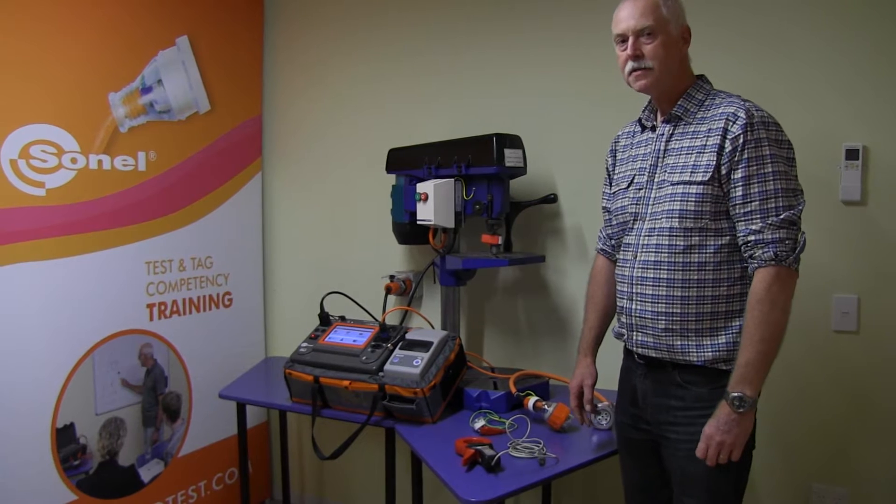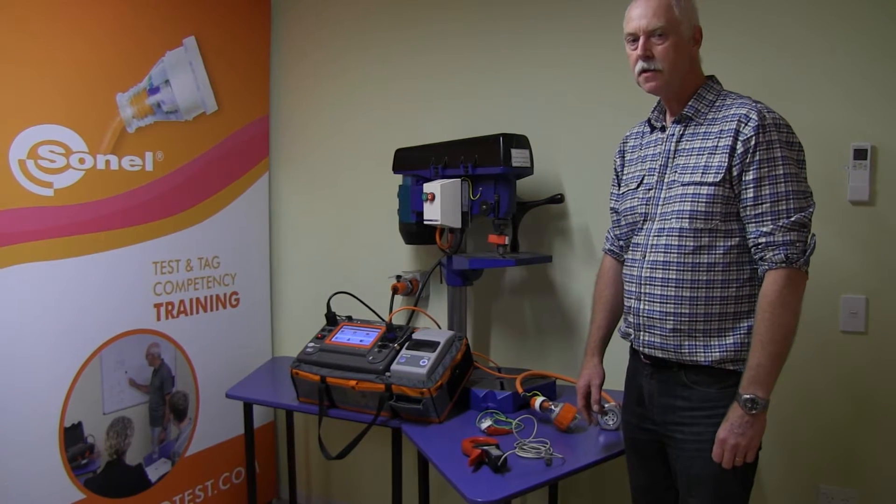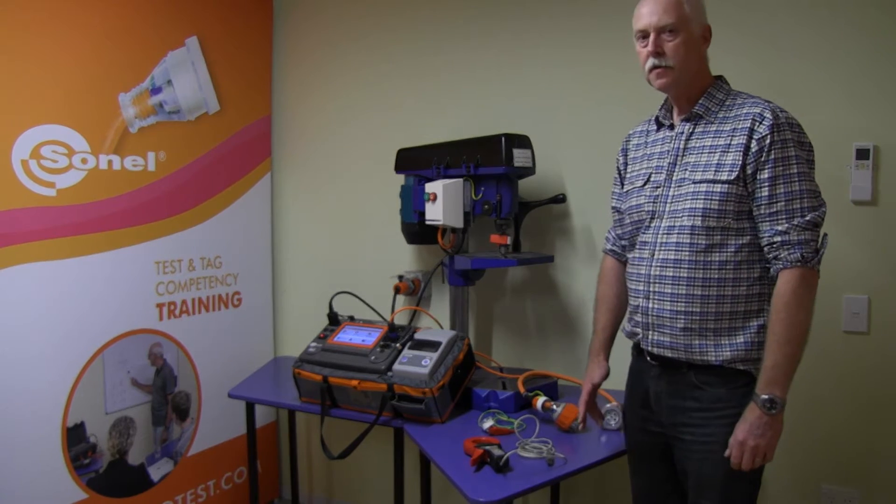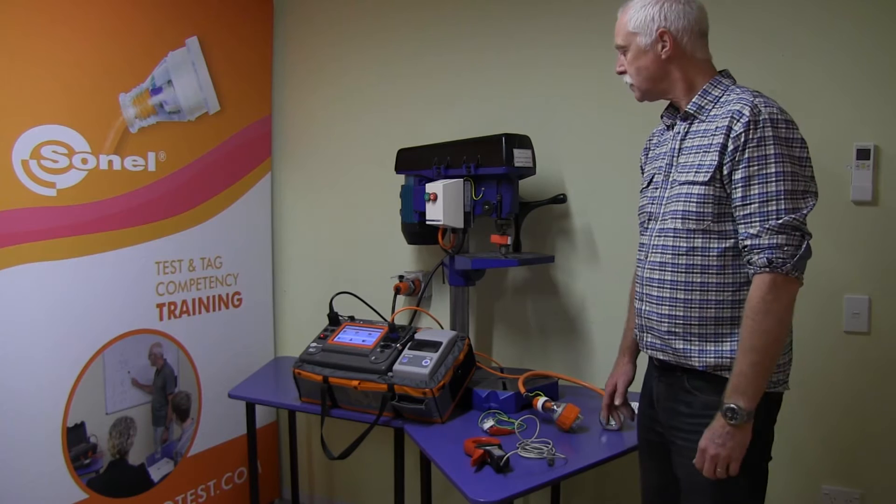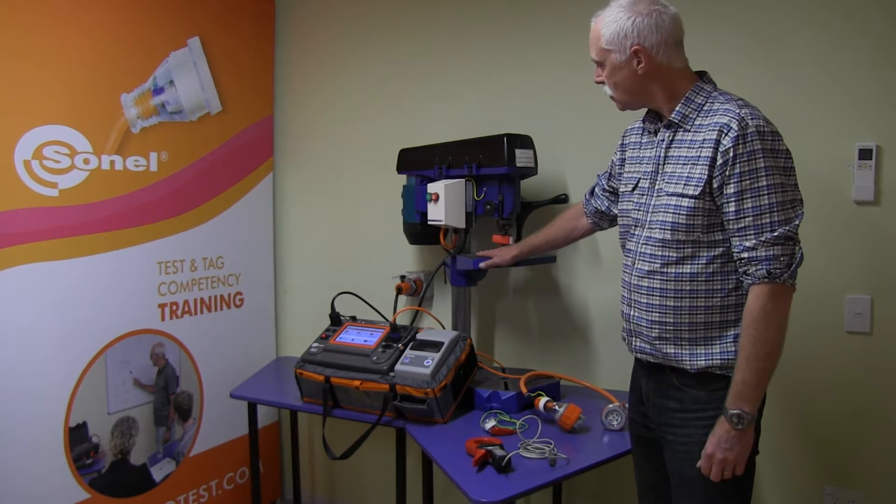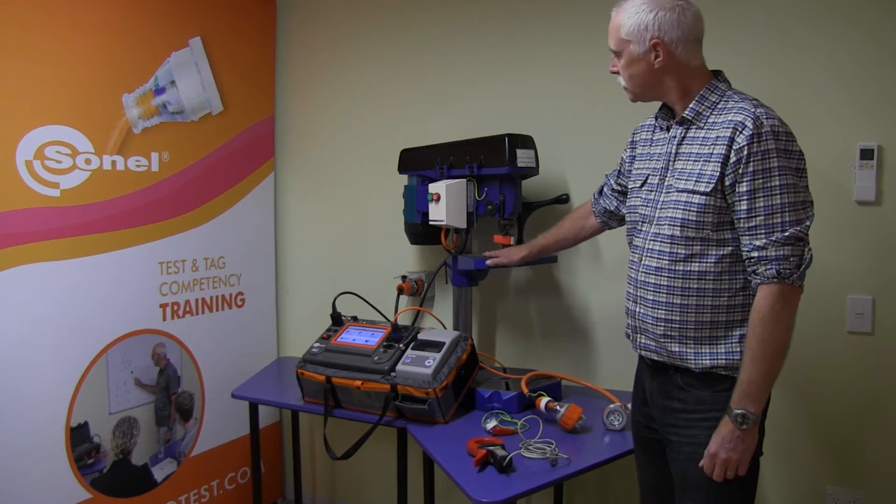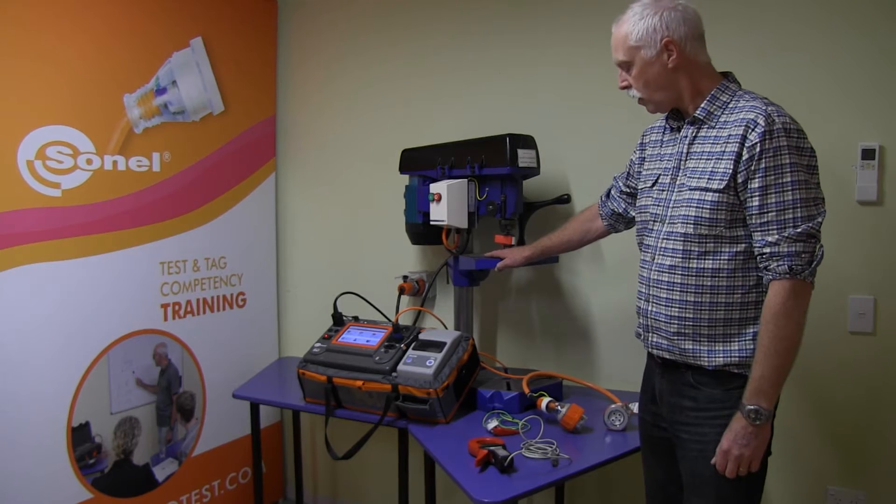I'm demonstrating how to test three-phase appliances in New Zealand or Australia in accordance with the 3760 standard. This standard requires a power-up leakage test on equipment like this. We cannot do an insulation test at 500 volts normally, so a leakage test is required.